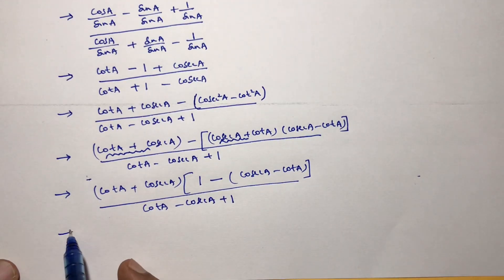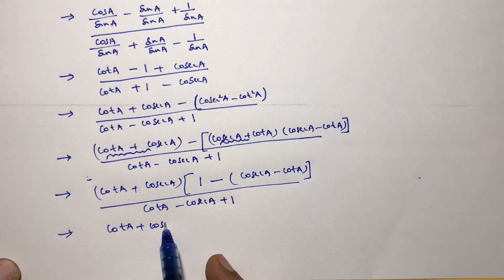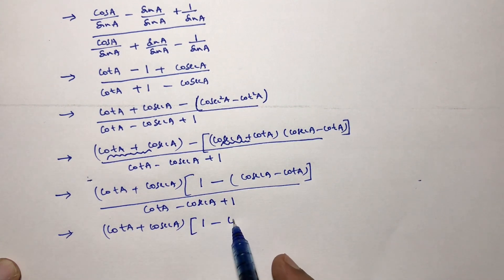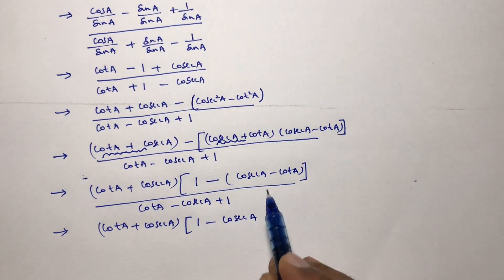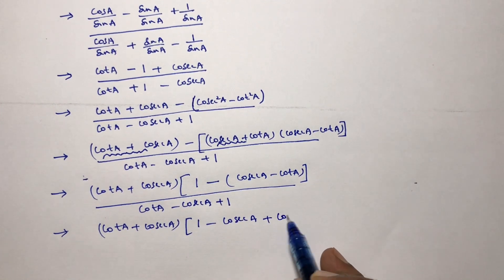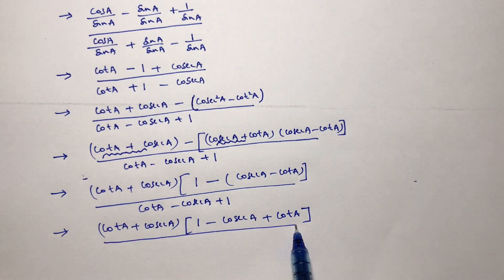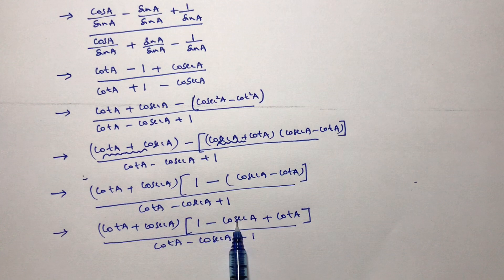Next step, we will see cot A + cosec A into [1 - cosec A + cot A], divided by the same denominator cot A - cosec A + 1. Now see, cot A - cosec A + 1 by cot A - cosec A + 1 will get cancelled, and we get cot A + cosec A.